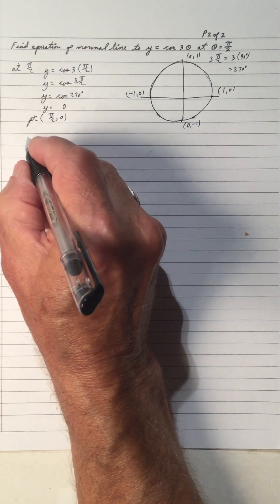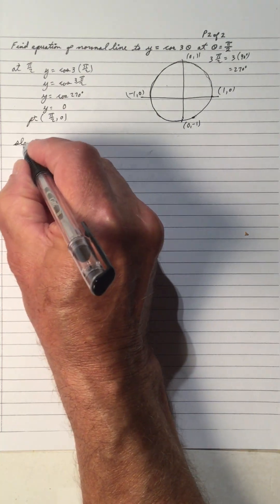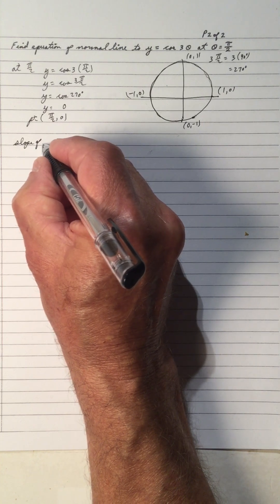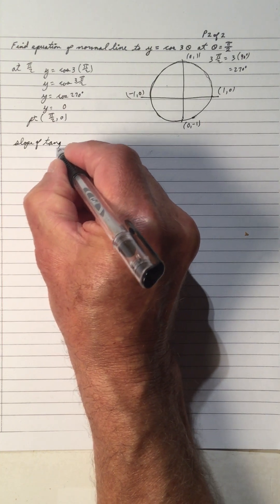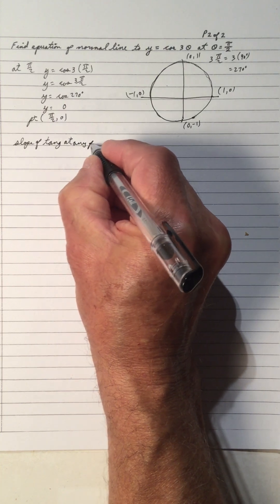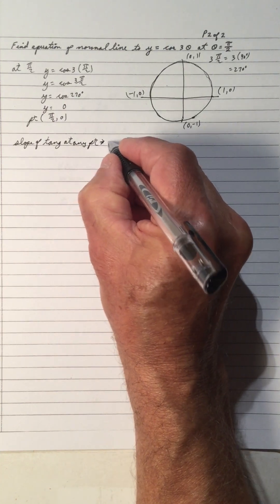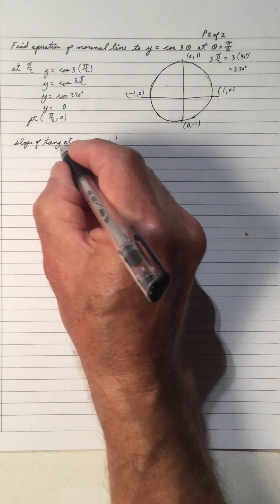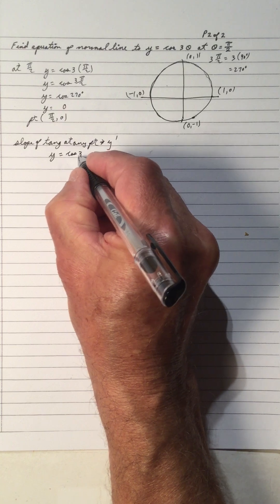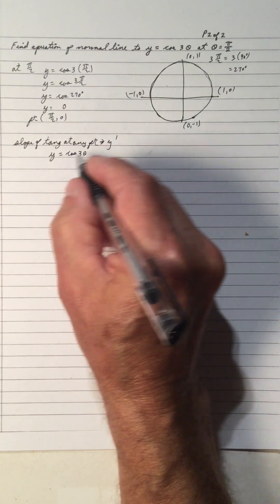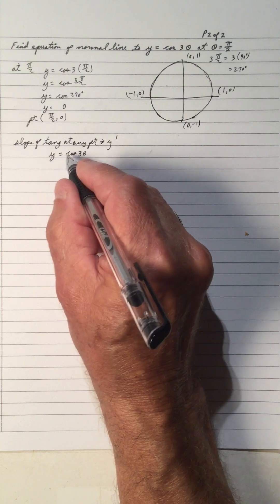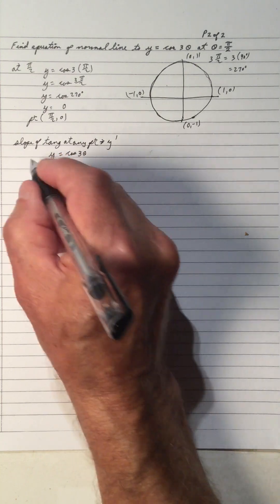Now let's find the slope. The slope of the normal is perpendicular to the slope of the tangent. The slope of the tangent at any point is y prime. Since we have y equals cos 3 theta — note that we don't have y and x, so it's not dy/dx, it's dy/d theta.